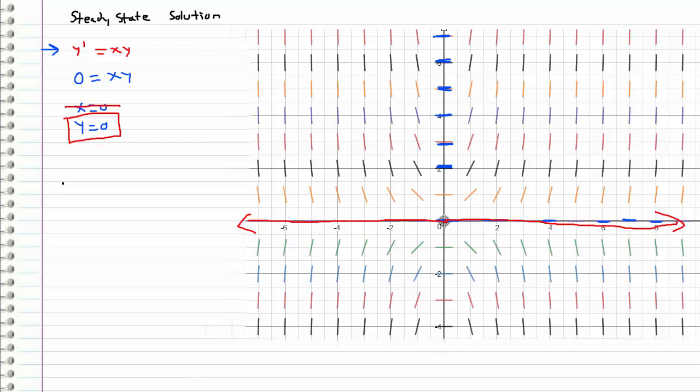But now we can look at stability, and this is part of the reason why we drew a slope field—because we can easily categorize this steady state solution by looking at stability.